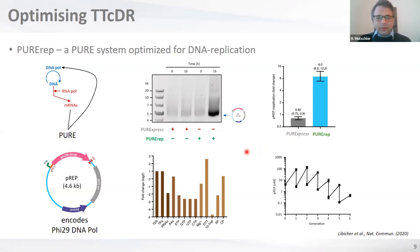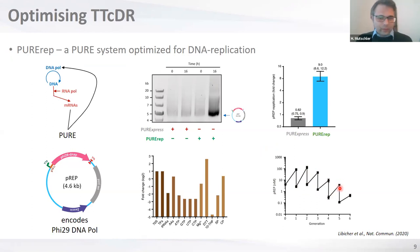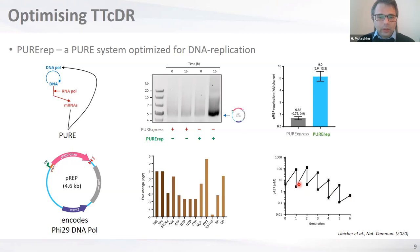You can even do serial transfer with PURE-REP — take a small fraction of the reaction where the P-REP plasmid is self-replicating and transfer to a fresh reaction. The concentration first drops, but the system starts to replicate again. You can keep the system running for several generations this way; eventually it dies, presumably because there is no selective pressure to maintain the genetic information.